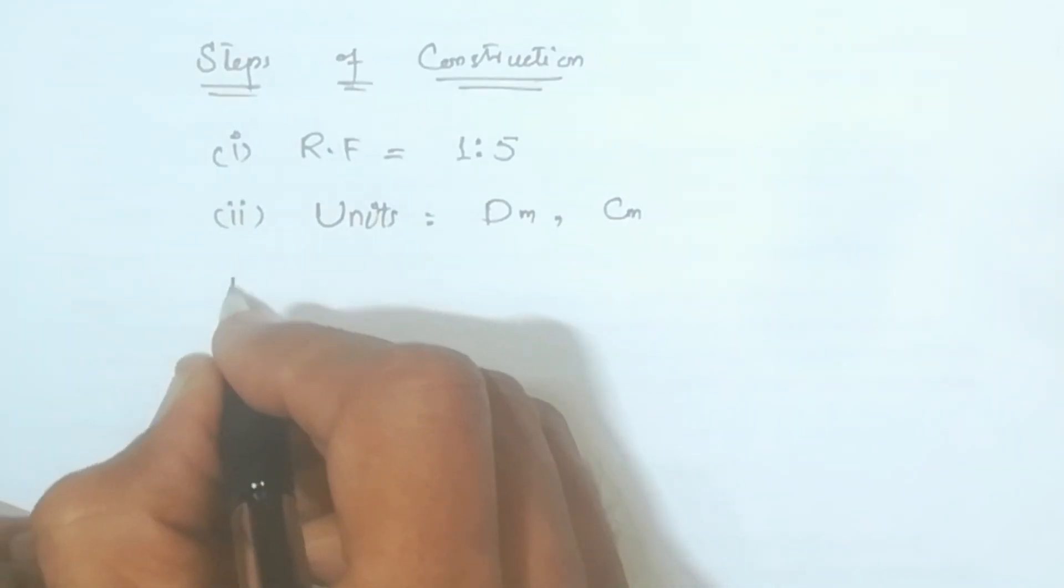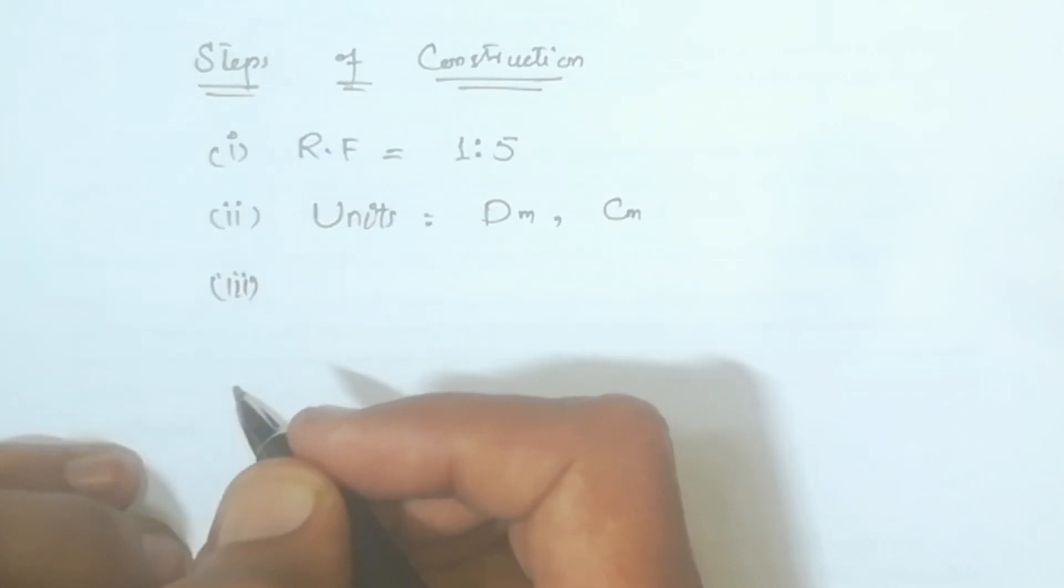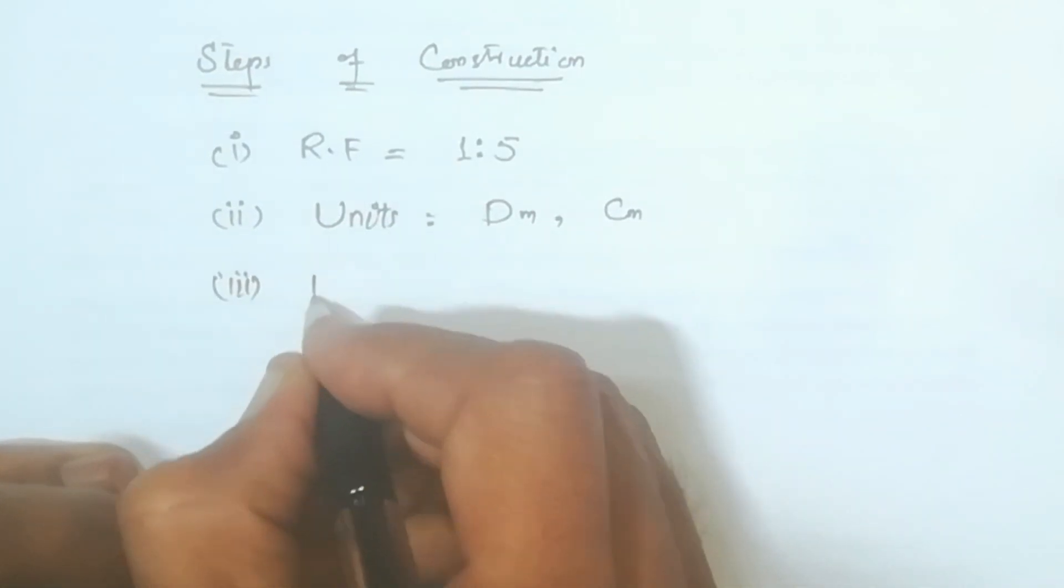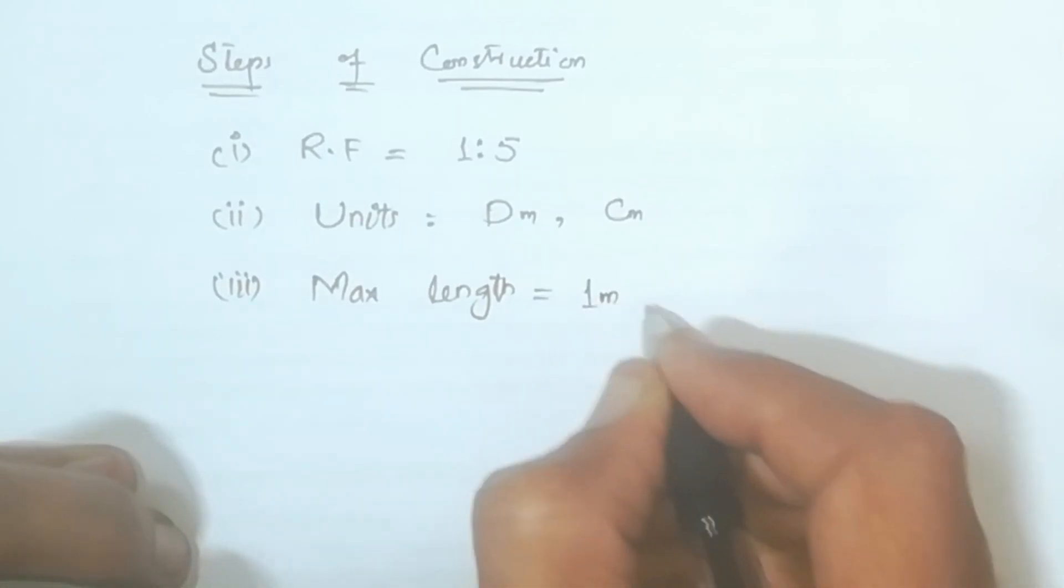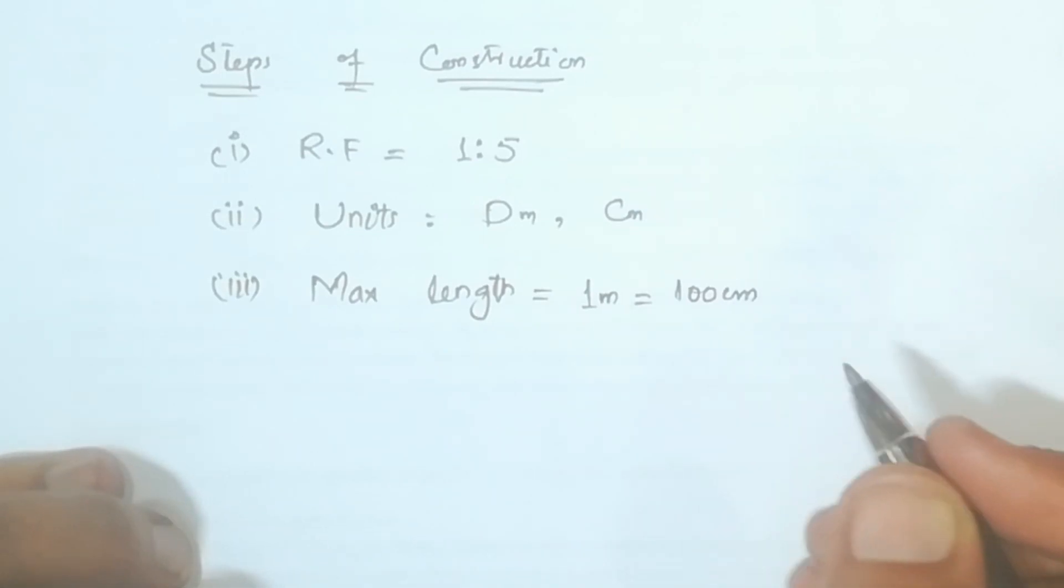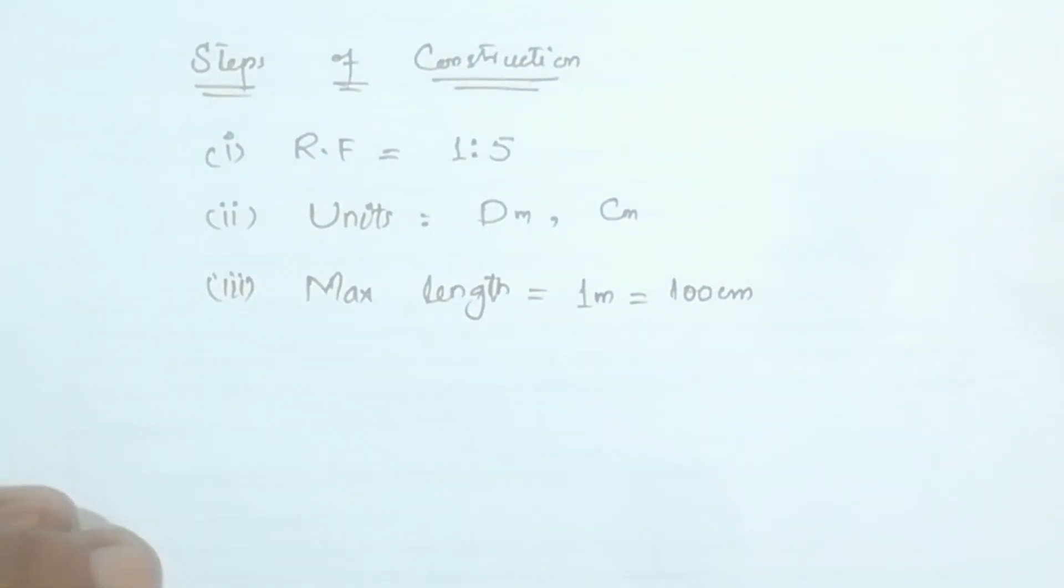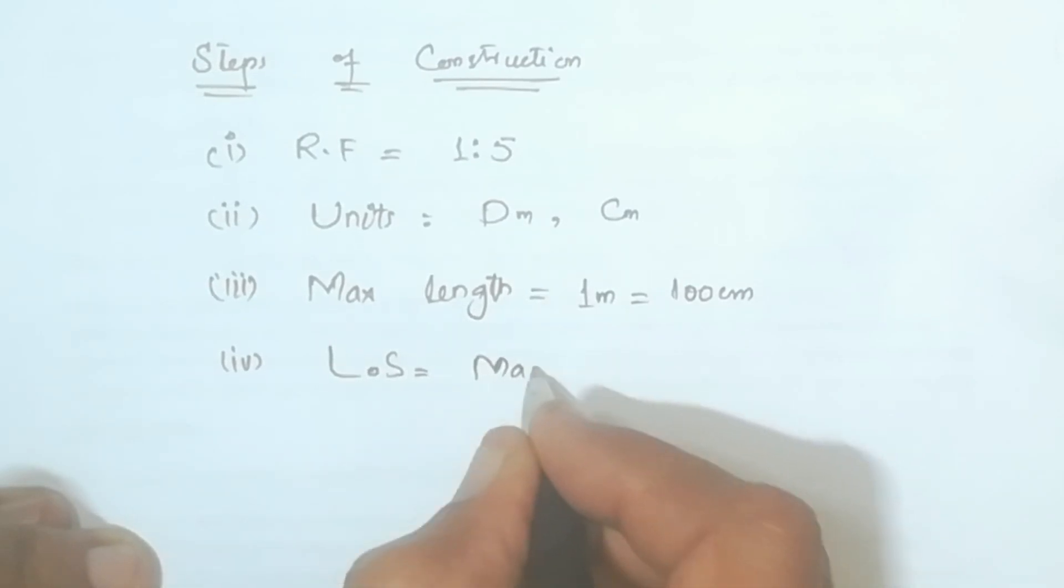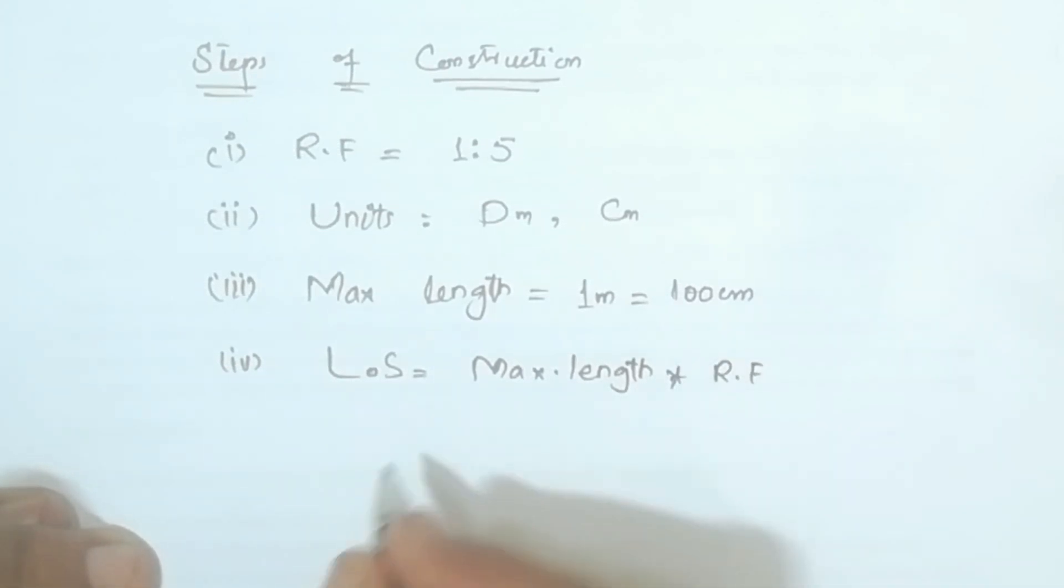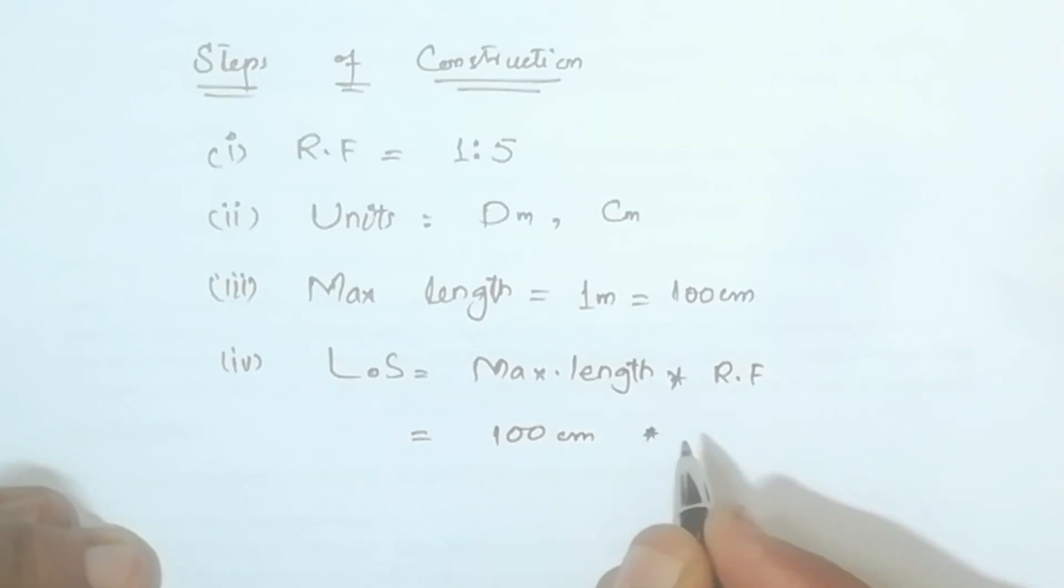So here we have a length of scale, this way we have a maximum length which is one meter, which is equal to 100 centimeter. So let's have a length of scale, LOS is equal to maximum length and to representative fraction. Maximum length is 100 cm, multiply by representative fraction 1 divided by 5. I will solve it, my answer is 20 cm.